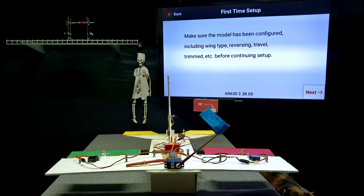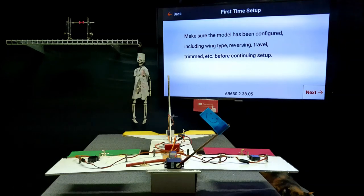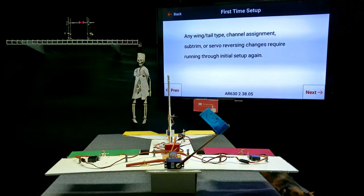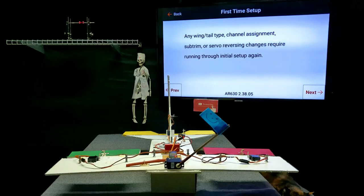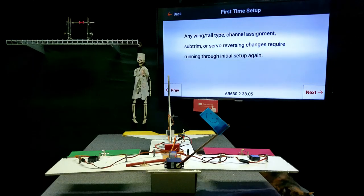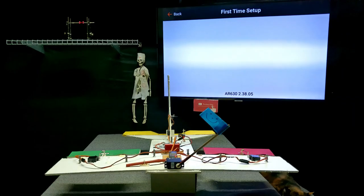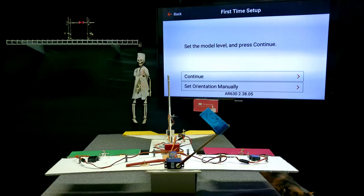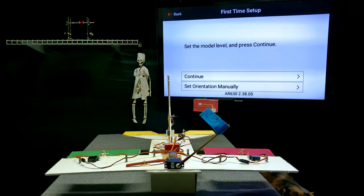Okay, then we're here at forward programming. Next, just like I went through, make sure your wing and tail type or channel assignment and all is set up. This is where we're going to set the orientation of the receiver and it says set the model level and press continue.